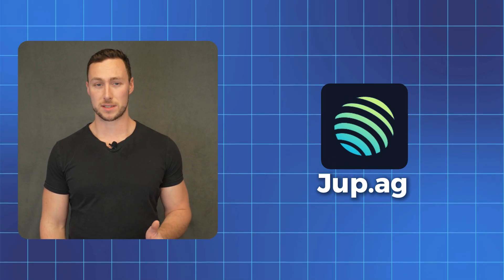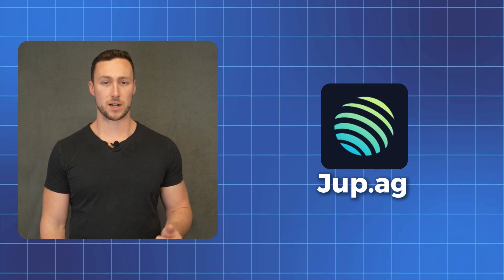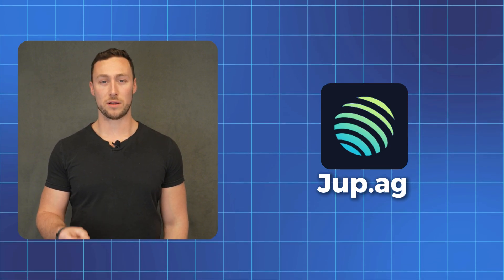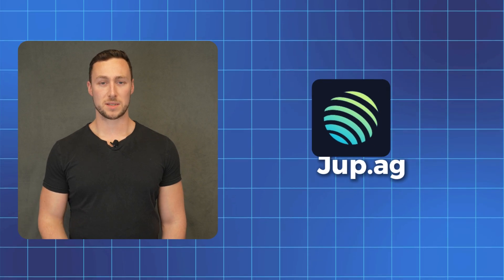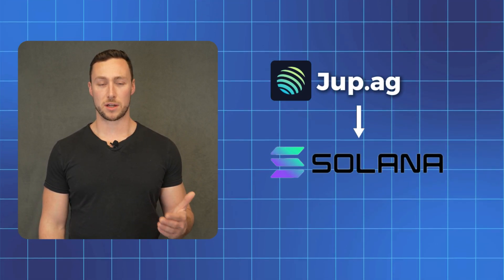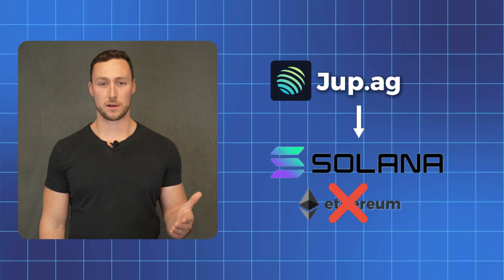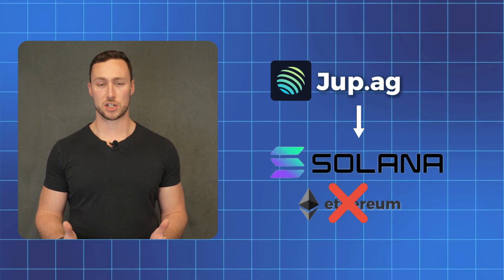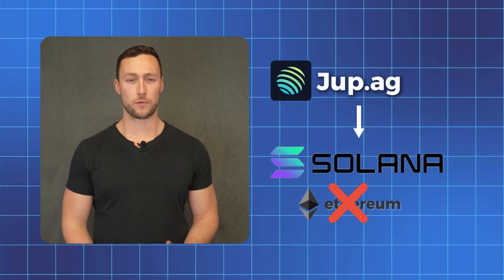Jupiter helps you find tokens you want to buy at the best prices. There are a lot of decentralized exchanges on Solana — Raydium, Orca, to name a couple. Jupiter plugs into nearly all of them to find all available tokens at the best prices. It's important to note that Jupiter only works on the Solana network. Jupiter will not find tokens on other networks like Ethereum, so if you don't see tokens you're used to buying on an exchange like Coinbase, that's probably why.